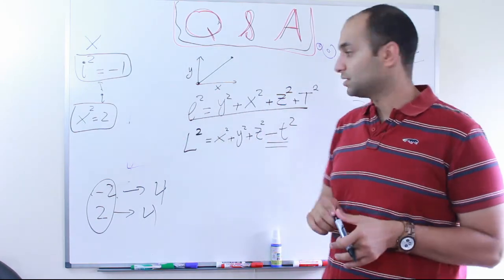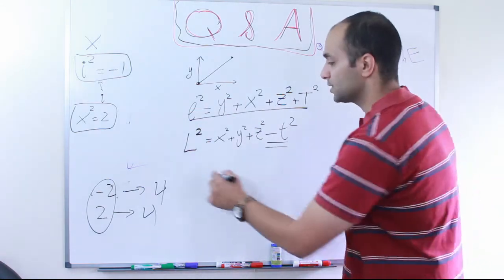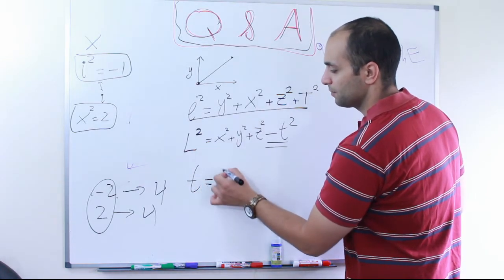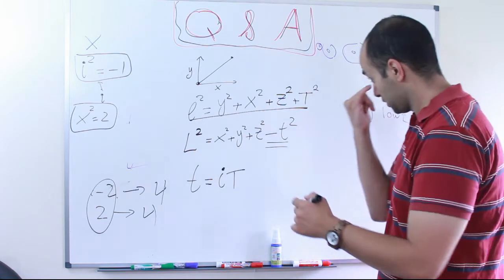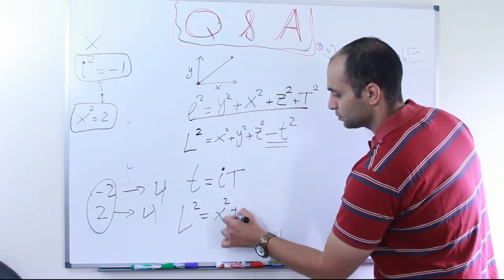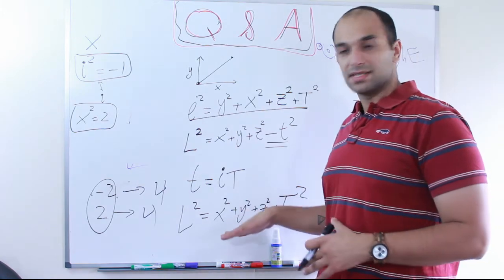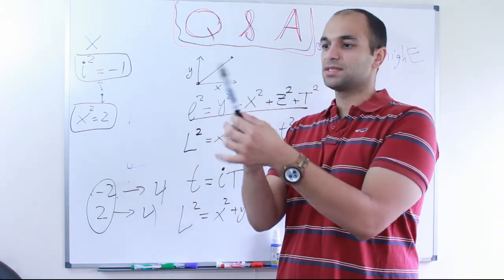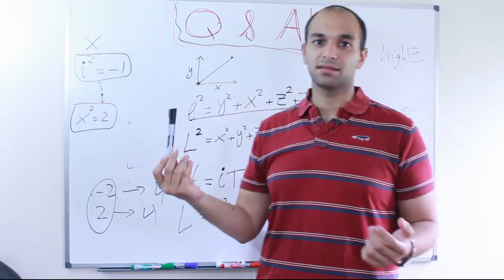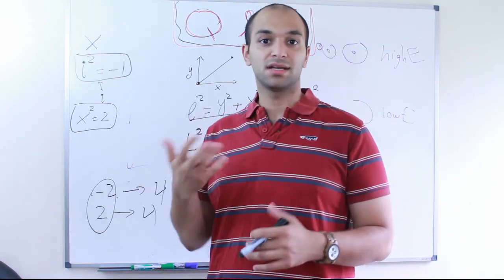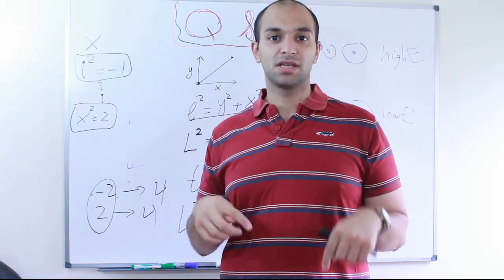Here's where imaginary time comes in — it's purely a mathematical trick. You say: this time is actually imaginary. It's i times capital T, where i squared equals minus 1. So now L squared equals x squared plus y squared plus z squared plus t squared — no minus sign. When you go to imaginary time, Einstein's theory just becomes rotationally invariant, just like saying wherever I look, this pen has the same length. That's it — it's just a mathematical trick to relate rotation to Einstein's theory. Thank you for watching, and please leave your questions in the comment section. I'll answer them next week.